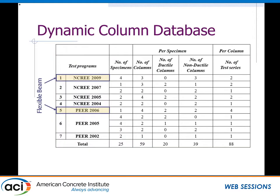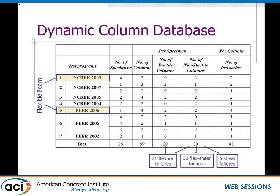We had seven test sets in total. These tests involved frames of different size, different numbers of columns, and involved both ductile and non-ductile columns in terms of transverse reinforcement spacing. In the end, we ended up with 21 flexural failures, 33 flexure-shear failures where there's some degree of flexural yielding prior to shear failure, and only five shear failures. So obviously quite a bit more limited data set than what Professor Ghanoum was showing, but still relevant.